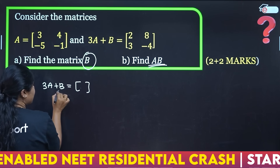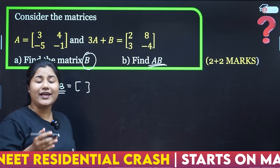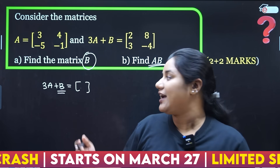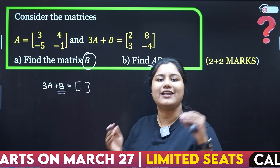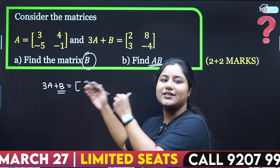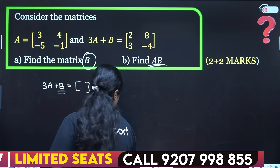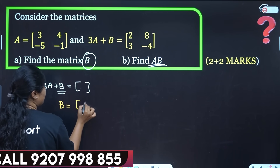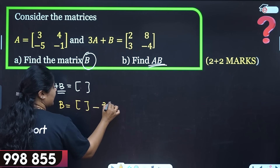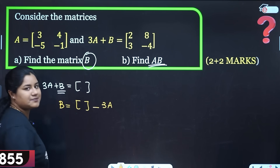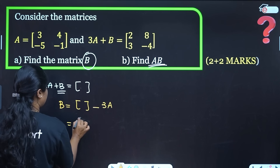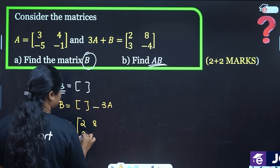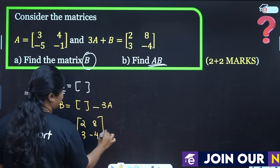Normally, if you have 2x plus y equal to a constant and need to find x or y, you write it to the right side of the left side. So b is equal to this matrix minus 3a. The matrix given is [2, 8; 3, minus 4], minus 3a.